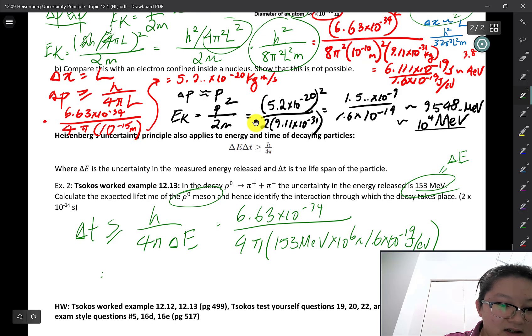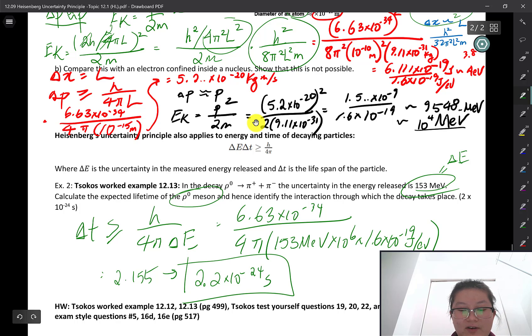We get 2.155. It's going to round to 2 sig figs. So about 2.2 times 10 to the power of negative 24 seconds. So it is a very extremely short amount of time.